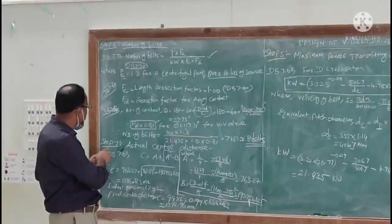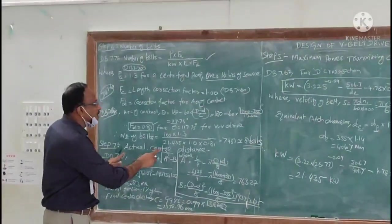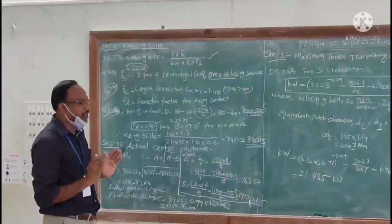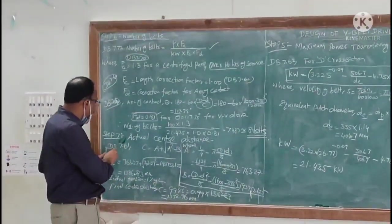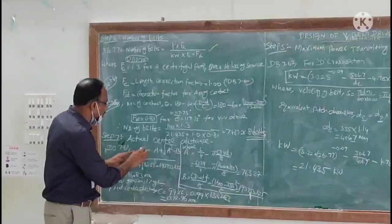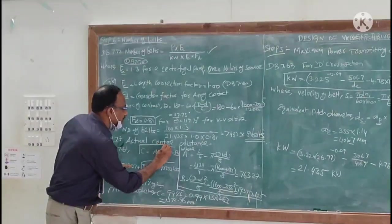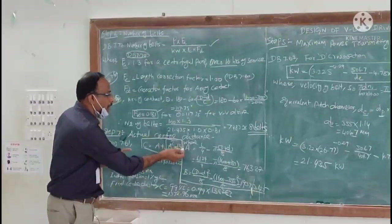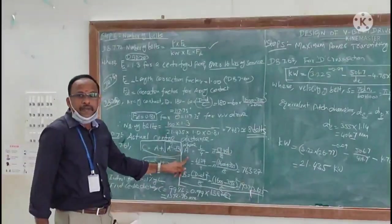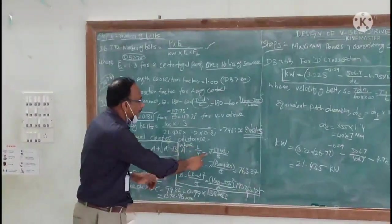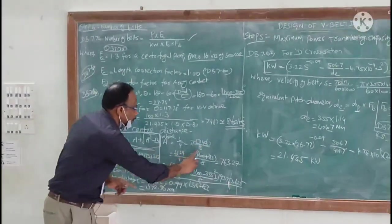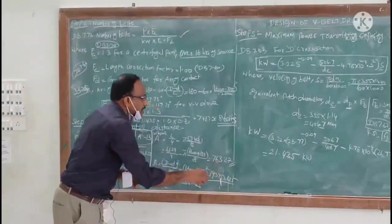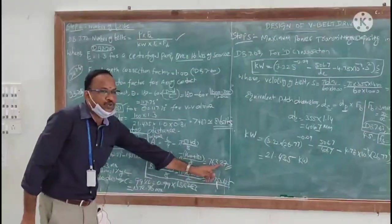Now we move to the next and final step, step number 7: actual center distance calculations. Here from the data book 7.61, we have this formula: C equals a plus square root of a squared minus b, where capital A is L by 4 minus pi times (D plus d) by 8. Substitute the value, we can get this number 763.27.